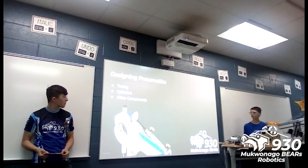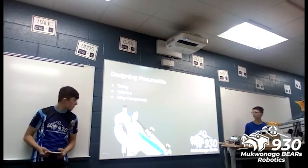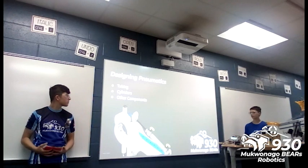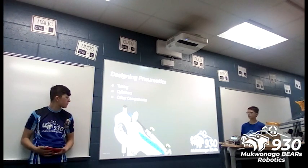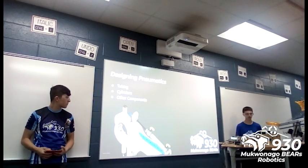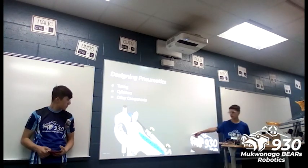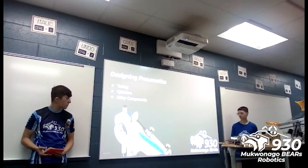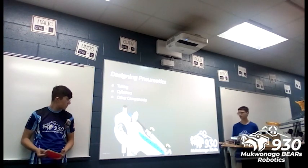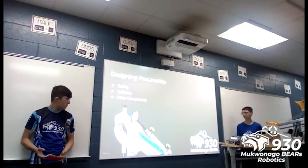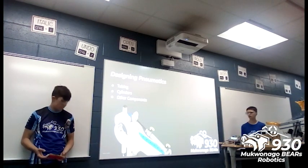The next thing we're going to look at is how we design pneumatics. The main way that we design tubing is we don't actually have all the tubing length in CAD, but what we can do — as you can see in this picture — is we add just the starting point of where the pneumatic tubing comes from. That allows us to make sure that we're not interfering with anything else or going out of frame.